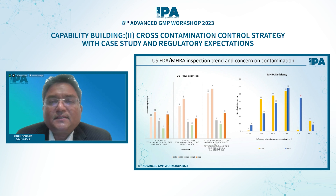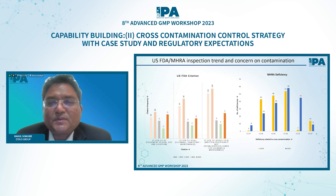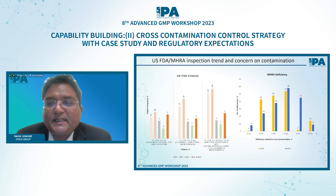This is the USFDA and MHRA inspection trend. For other agencies, a similar trend exists, but this was the most easily available, so that's why I showed it here. These are the 483 observations or MHRA deficiencies received. The volume is consistent — more or less increasing or decreasing throughout the years. That is what I wanted to highlight here.